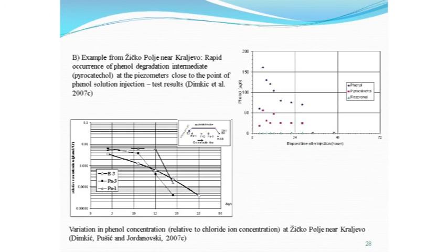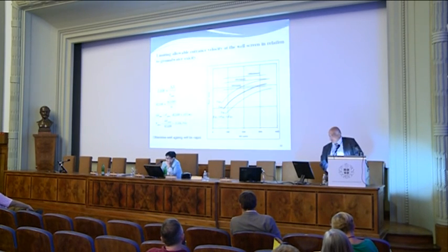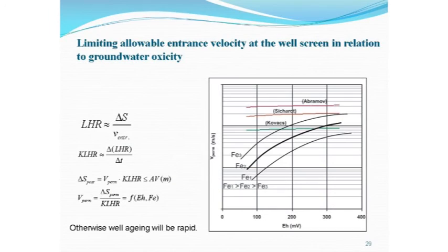As a digression: twenty to twenty-five years ago, the behavior of phenols in oxic and anoxic groundwater and the appearance of intermediates was studied. Also, regarding the oxic state — below 300 or 250 millivolts, biological and microbiological clogging of the well begins, and we must calculate with different critical velocities if we want good water wells.